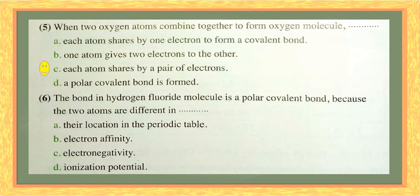Question six: the bond in a hydrogen fluoride molecule is a polar covalent bond because the two atoms are different. What determines the kind of bond? Not their location in the periodic table, not electron affinity — it is electronegativity, which is the right answer. There is a big difference in electronegativity between fluorine and hydrogen, so it is a polar covalent bond.